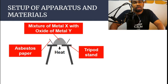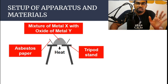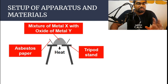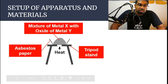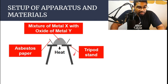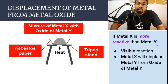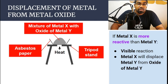Let's take a look at what happens when we mix a metal with a metal oxide and heat it up — this is a displacement reaction. I've already covered displacement of metals in their salt solution; the link to that video is at the corner. This is not in solution — this is in solid form. So if we have a mixture of metal X together with the oxide of another metal Y, heated together on an asbestos paper on a tripod stand, and if metal X is more reactive than metal Y, then there will be a visible reaction and metal X will displace metal Y from the oxide of metal Y.